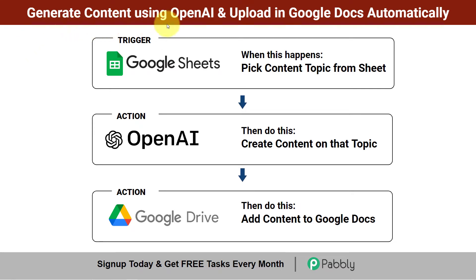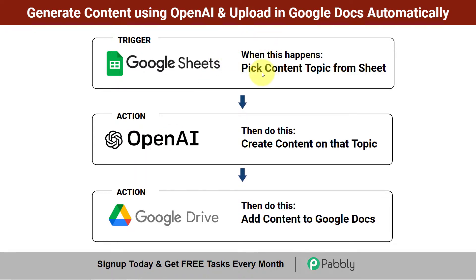In this video I will show you how to generate content using OpenAI and upload it in Google Docs automatically. I will add a list of topics in my spreadsheet and then create an automation across three applications so that it will automatically pick a content topic from the spreadsheet, create content on that topic using OpenAI, and further add that content to Google Docs automatically.